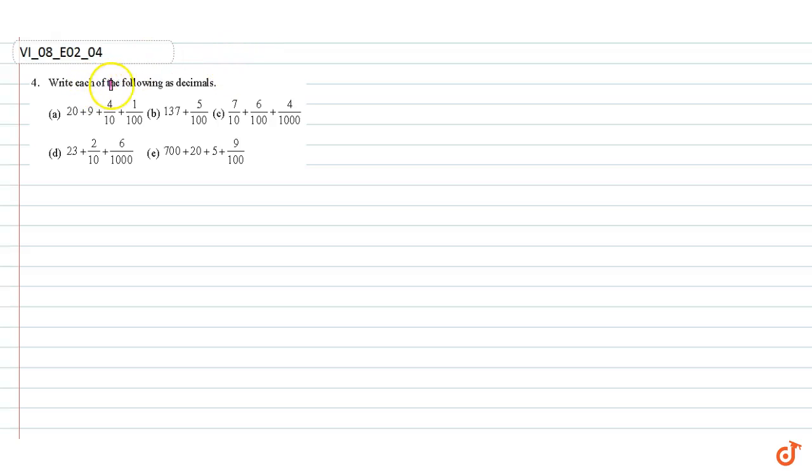In this question, write each of the following as decimals. Part (a): 20 plus 9 plus 4 by 10 plus 1 by 100. This is equal to 29 plus 0.4 plus 0.01, which is equal to 29.41.